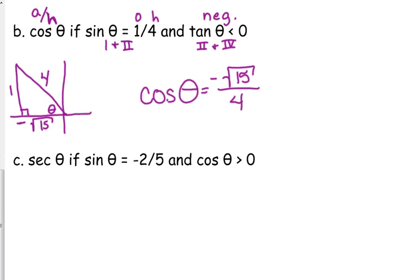Let's find the secant of an angle. Secant is the reciprocal of cosine, so it's hypotenuse over adjacent. Sine — opposite over hypotenuse — is negative two over five, so sine is negative. That puts us in the third or fourth quadrant. Cosine is greater than zero, meaning it's positive, which is in the first and the fourth. So we are in the fourth quadrant.